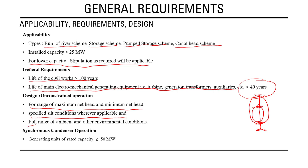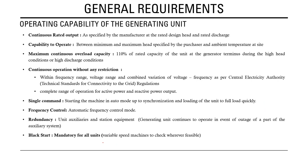Generating units with rated capacity more than 50 MW must have synchronous condenser operation capability, which helps with voltage control. This is especially important for hydro plants because they can operate at full capacity at one time but may be completely shut down at another, and being located in remote areas, voltage situations may arise.